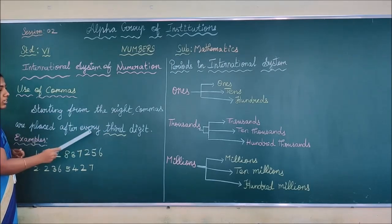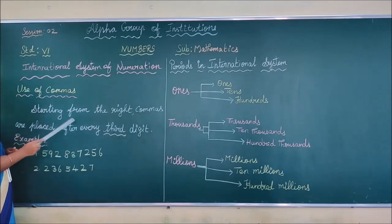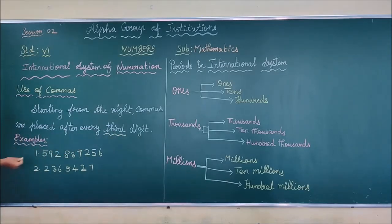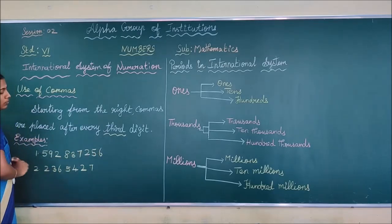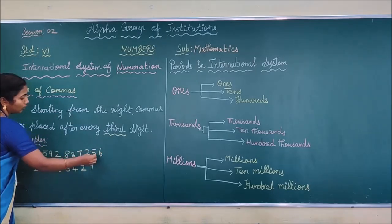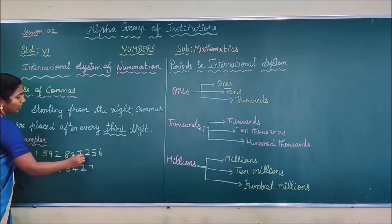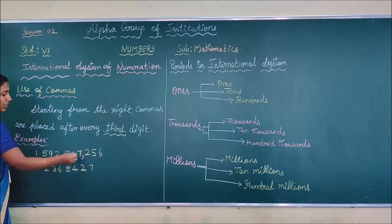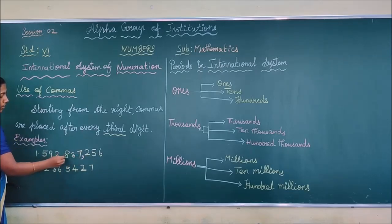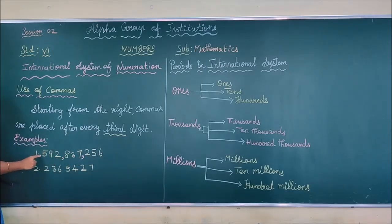Let me repeat the definition. Starting from the right, commas are placed at every third digit. That means every third digit you are going to place a comma. Let us see this example. Starting from the right of the number, count 1, 2, 3 — here you place the first comma. Every means at every third digit you put a comma. Then 1, 2, 3 again, and place another comma. Before that, if you don't have any more numbers, you stop the comma there.